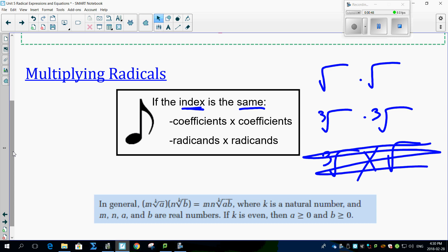So if the index is the same, all you have to do is multiply the numbers that are out front and multiply the radicands. That's it. So here's a nice little technical definition. If you want to look at it, go ahead.